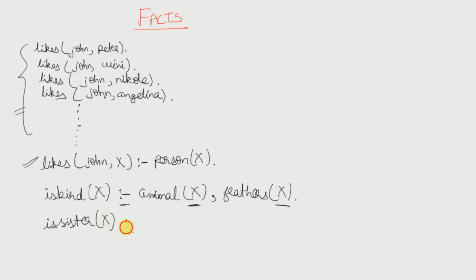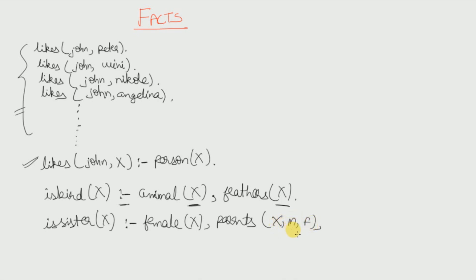We write: is_sister(X, Y) :- female(X), parents(X, M, F). The predicate parents(X, M, F) means the parents of X are M and F, where M is the mother and F is the father of X. Note: it should be is_sister(X, Y) because X is the sister of Y.